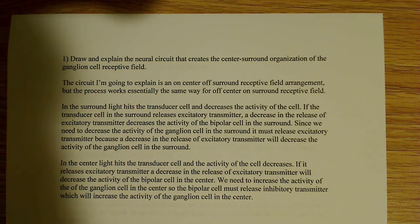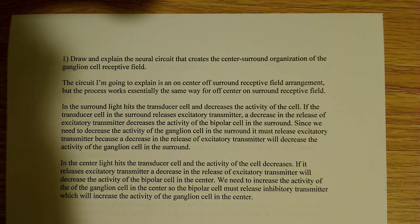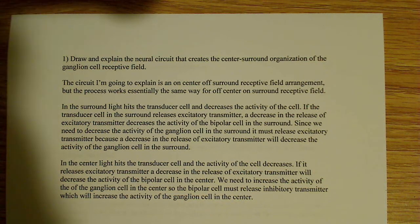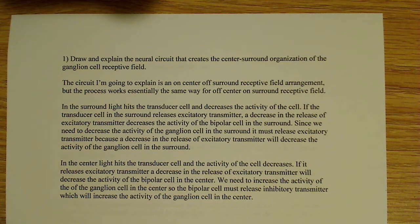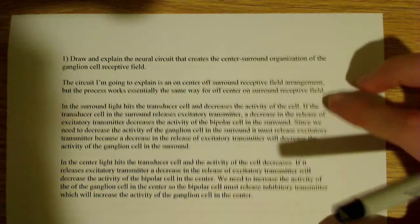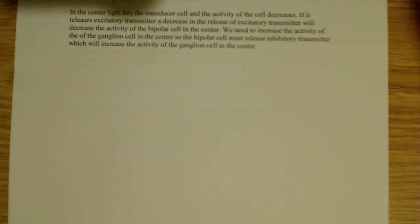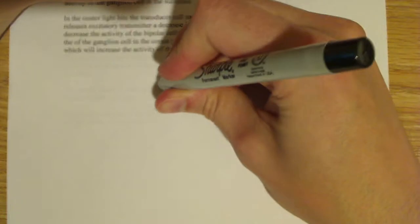I want to talk about how you would draw and explain the neural circuit that creates the center surround organization of the ganglion cell receptive field. It's quite a lengthy explanation, so I'm going to start by making a drawing here, and then I'm going to talk about and show my explanation for what all of this is.